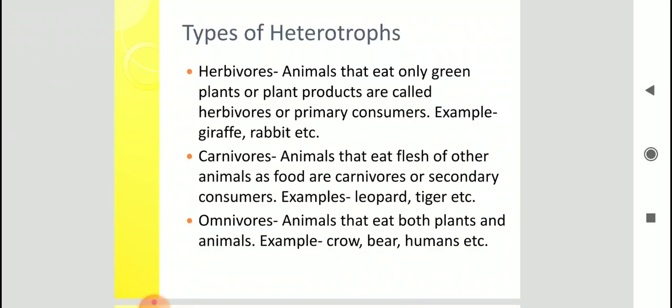Now, as I told you that living organisms, especially animals, they depend on different sources of food. So depending on that, some animals are herbivores, means they will eat only green plants or plant products. Some are carnivores, they eat flesh of other animals. And omnivores, they eat both, plant products as well as animals. You all know the examples as well. You have studied this in your previous class. Now, one thing that you have to remember is, herbivores are also known as primary consumers. Carnivores are also known as secondary consumers.